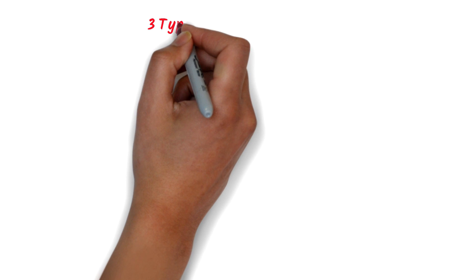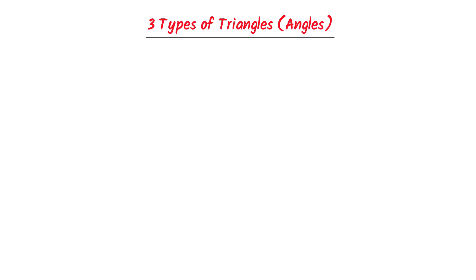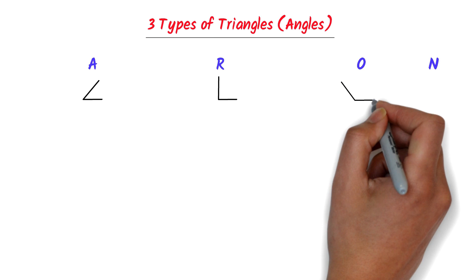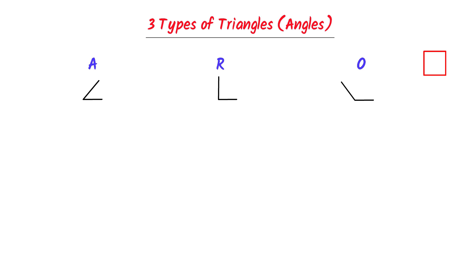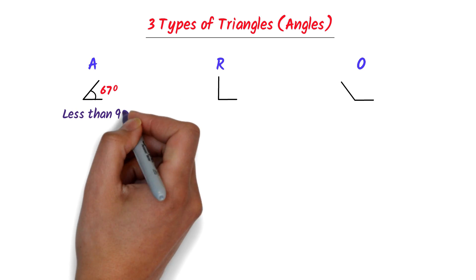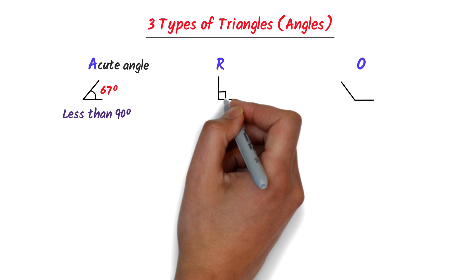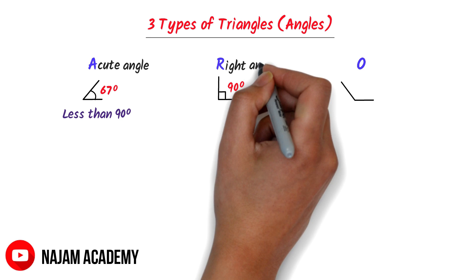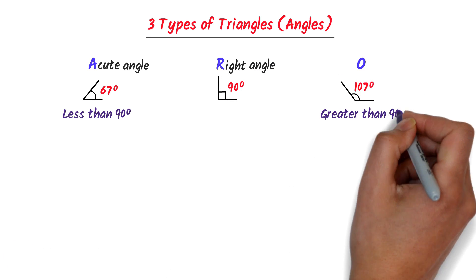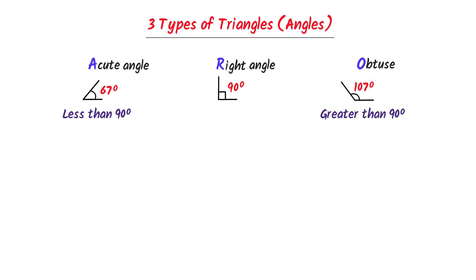Now let me teach you the three types of triangles on the basis of angles. I always write A, R, O, N — 'Arun.' Below A, I draw an acute angle. Below R, I draw a right angle. Below O, I draw an obtuse angle. I do not draw anything below N. This angle is less than 90 degrees, so A stands for acute angle. This angle is equal to 90 degrees, so R stands for right angle. And this angle is greater than 90 degrees, so O stands for obtuse angle.